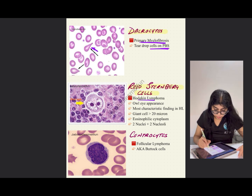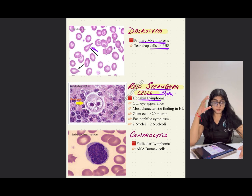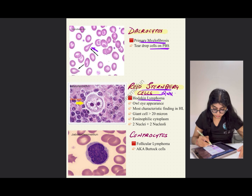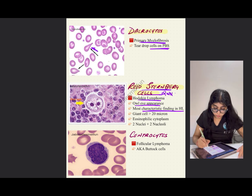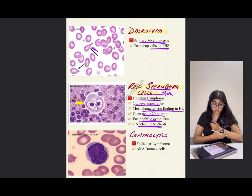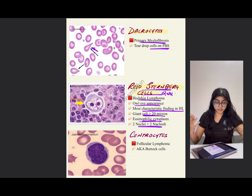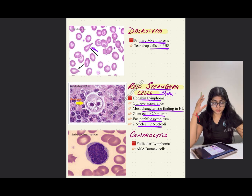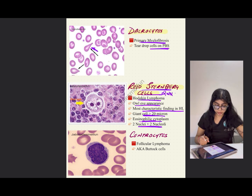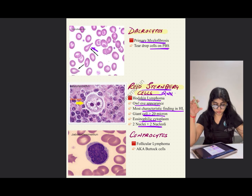Reed-Sternberg cells are seen in Hodgkin's lymphoma — always asked in the exam; at least one question is asked, and in the last FMG exam it was asked three times across both papers. Owl-eye appearance is the most characteristic finding in Hodgkin's lymphoma. The cell is bigger in size (more than 20 microns), has eosinophilic cytoplasm, and two nuclei. Owl-eye appearance is also seen in CMV infection in microbiology, so remember that the differential for owl-eye appearance is CMV infection.